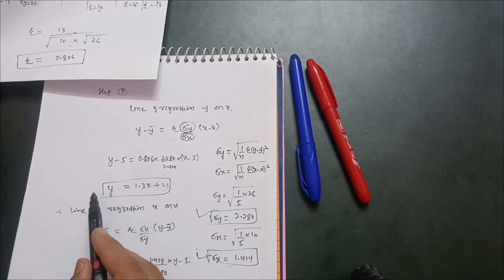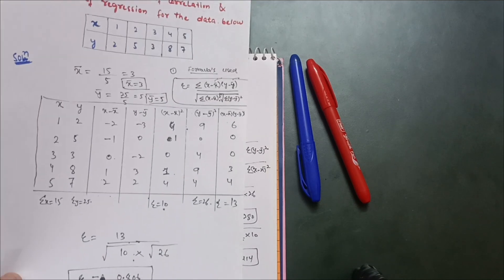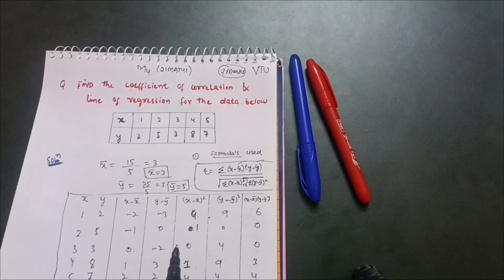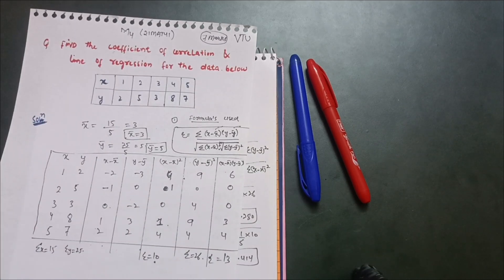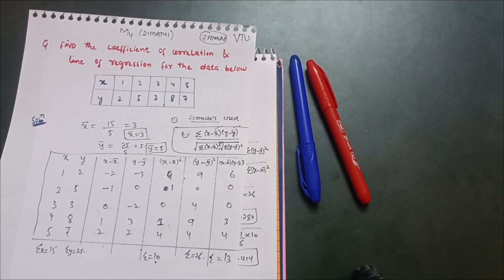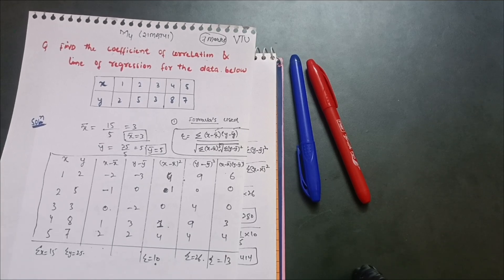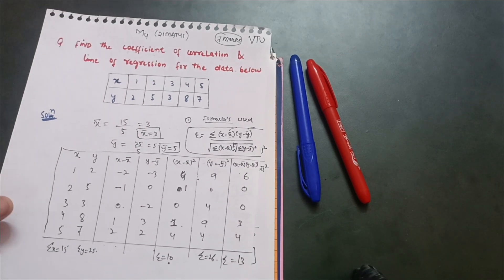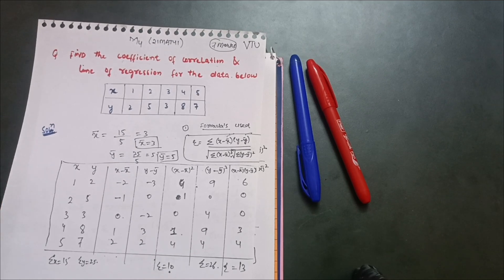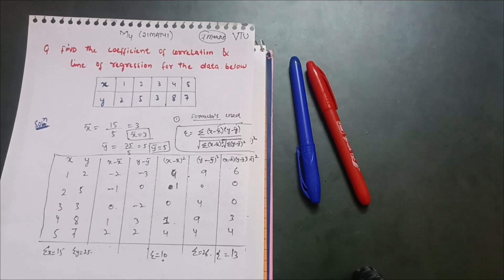So the two lines of regression are y = 1.3x + 1.1 (y on x) and x = 0.5y + 0.5 (x on y), and the coefficient of correlation r = 0.806. This is a very important question for the VTU examination. Practice 2 to 3 problems on this concept; it can help you easily score 20 marks in this module.